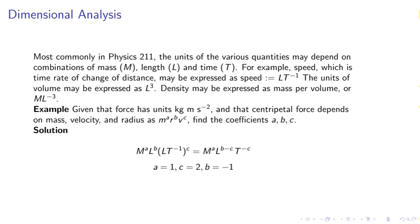Dimensional analysis. Most commonly in Physics 2100, the units of the various quantities may depend on the combinations of mass, length, and time. For example, speed, which is the time rate of change of distance, may be expressed as L t to the minus 1. The units of volume may be expressed as L cubed. Density may be expressed as mass per volume, or M L to the minus 3.